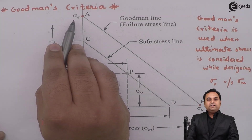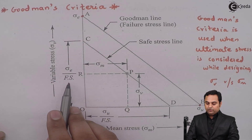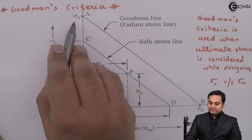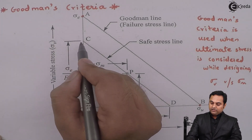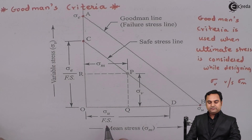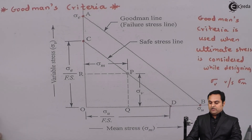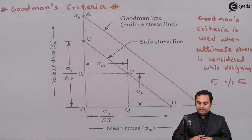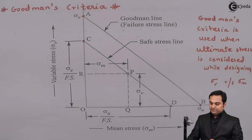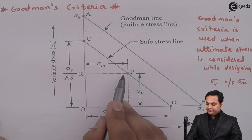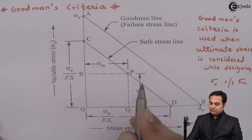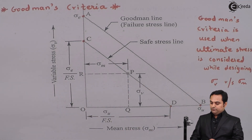Next, we divide Sigma E by the factor of safety. Since the factor of safety is always greater than one, dividing Sigma E by FS gives a reduced stress value at point C. Similarly, dividing Sigma U by the factor of safety gives point D. After getting points C and D, we draw a line from C to D parallel to the Goodman line AB. The midpoint of line CD is point P, called the design point, where the x-axis gives mean stress and the y-axis gives variable stress.